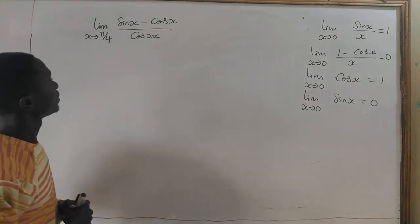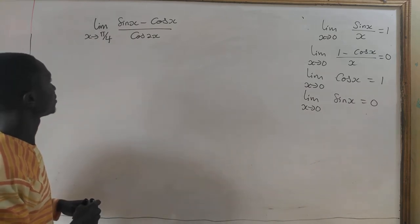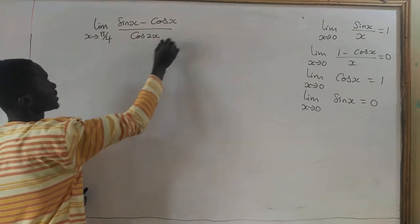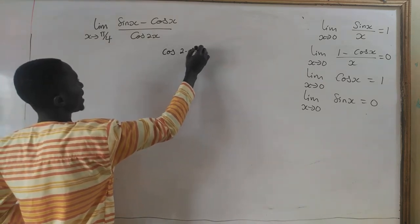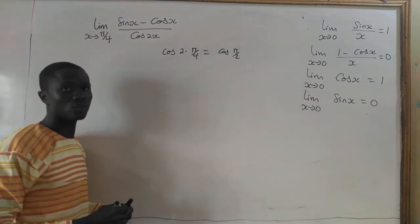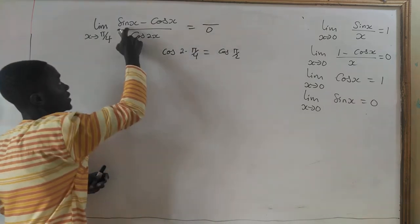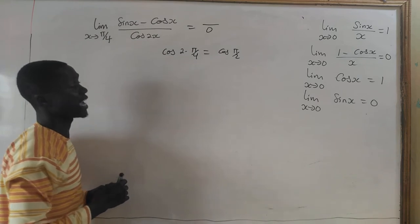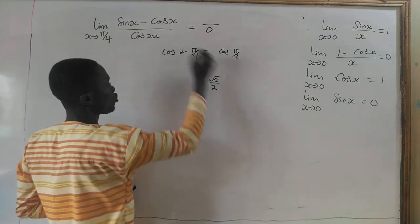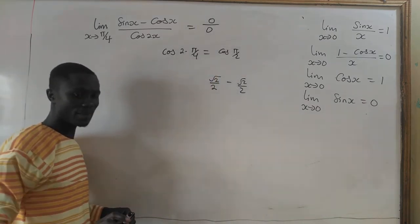Now, let's see how we move on it. If we do direct substitution, what are we going to get? We will get 0. Because if we put cosine of 2 times pi on 4, we get cosine of pi on 2, and pi on 2 is 90, so cos 90 is 0 — the denominator becomes 0. Sine of pi on 4 gives root 2 over 2, and cosine of pi on 4 also gives root 2 over 2, so the numerator becomes 0. We get 0 divided by 0, which is indeterminate.